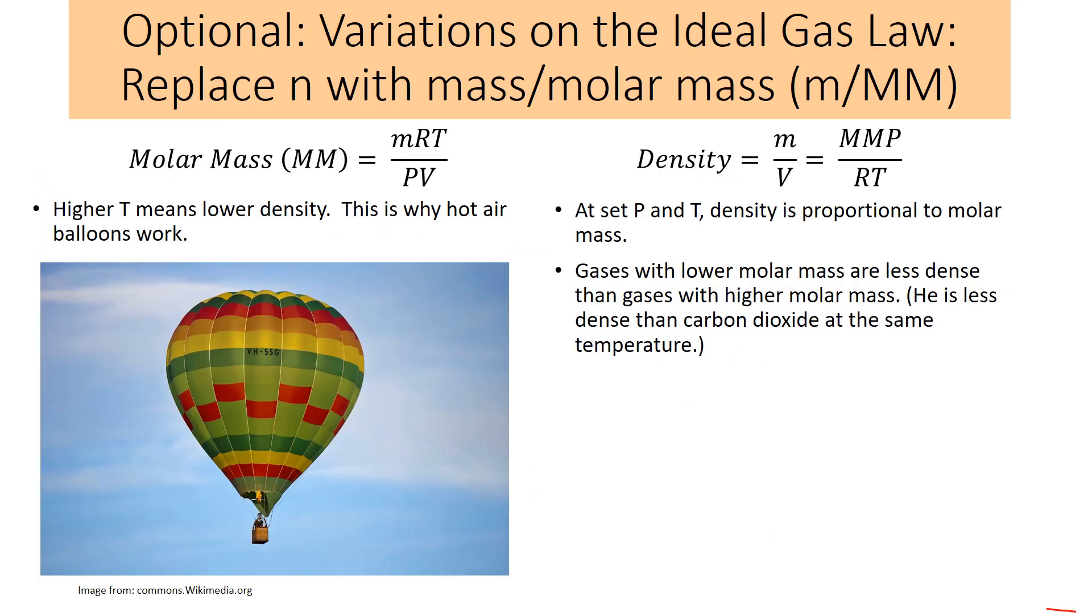There's some variations on the ideal gas law. You won't be tested on these, but they're interesting and important to look at. If you replace n, the number of moles, with mass over molar mass, this can give you some more information. One version, we can solve the ideal gas law for molar mass. You can find the molar mass of a gas if you know its mass, temperature, pressure, and volume. Another rearrangement gives us density.